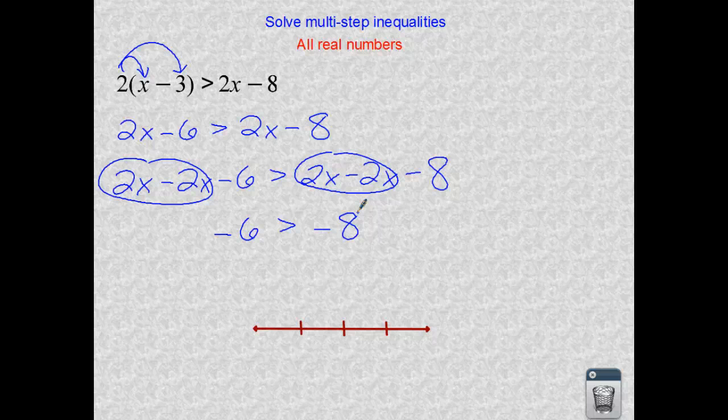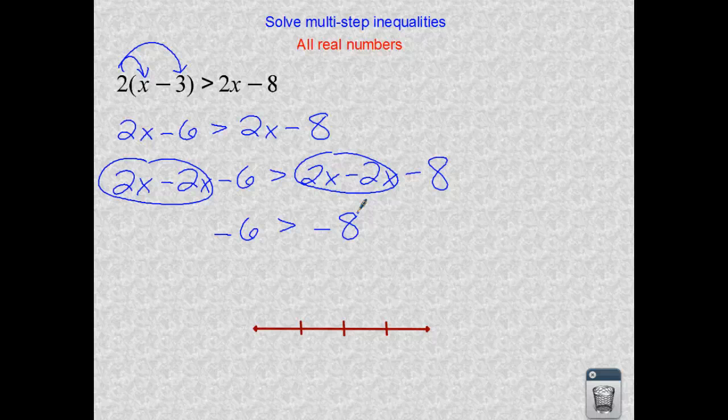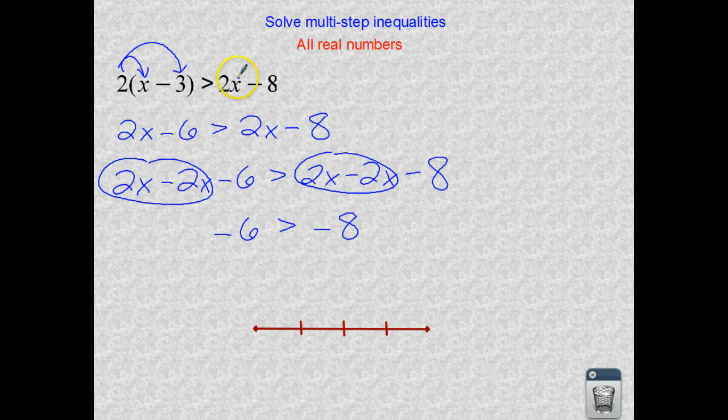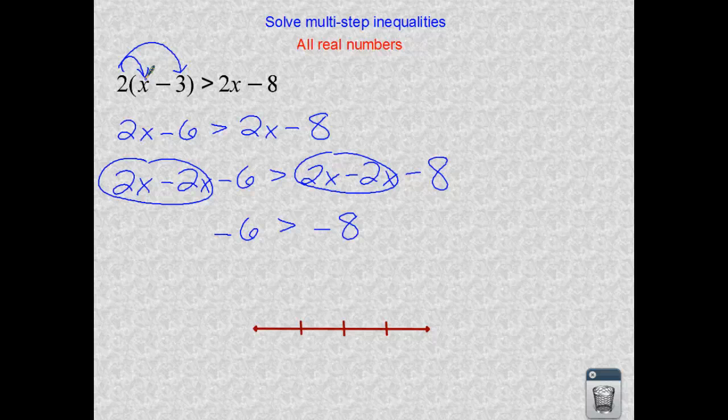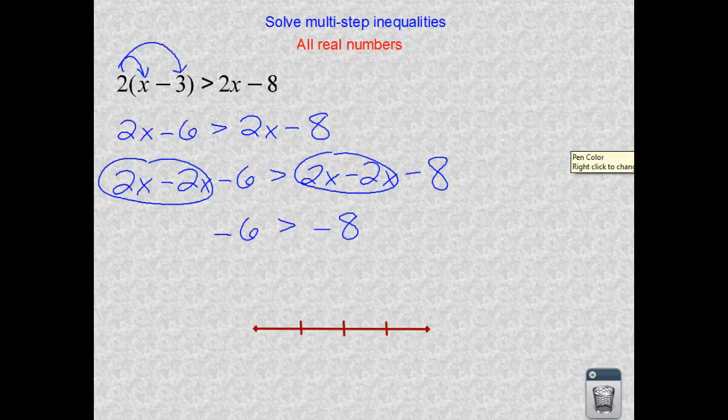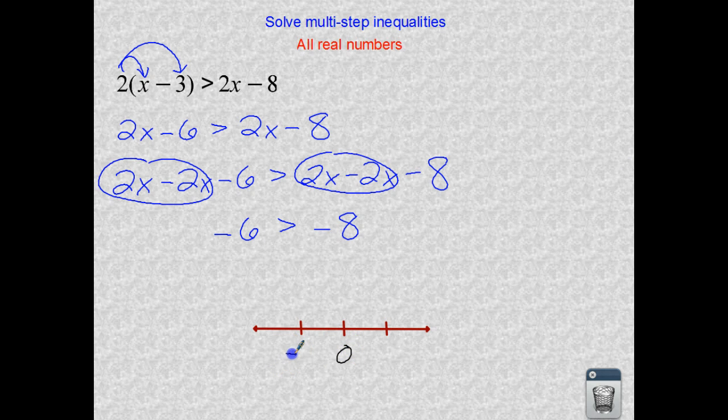Anytime you have these multi-step inequalities and you solve all the way down, your variables may be eliminated. And when they are, if the integers satisfy the inequality with the symbol that they give you, if it's a true statement, then this is a case where all real numbers will work when we substitute them back in for x on the right and x on the left. Every integer will work. So when we graph the answer, I'm going to just put some random numbers in there. Let's go with just 0, negative 1, and 1.